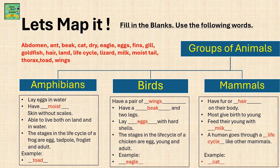Groups of animals are divided into six groups. The first one is amphibians. Amphibians lay eggs in water. They have moist skin without scales. They are able to live both on land and water.